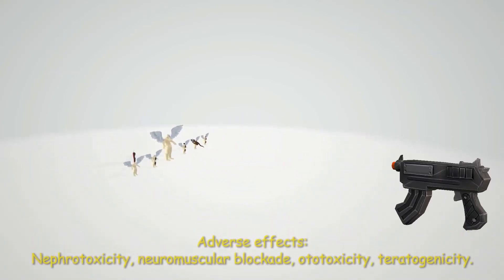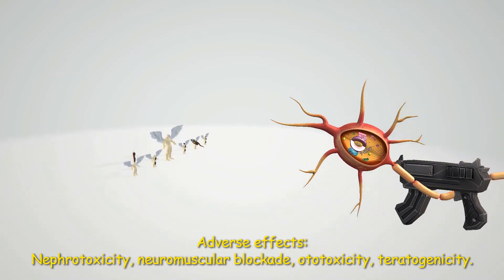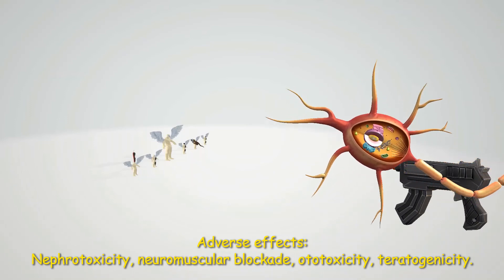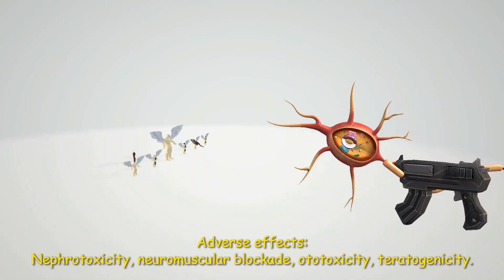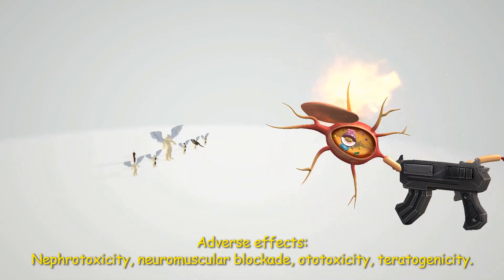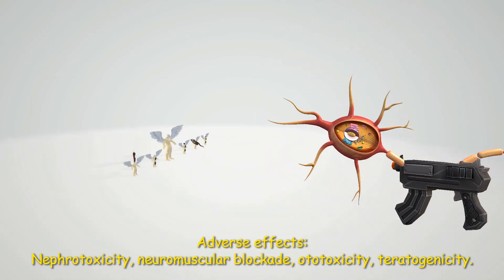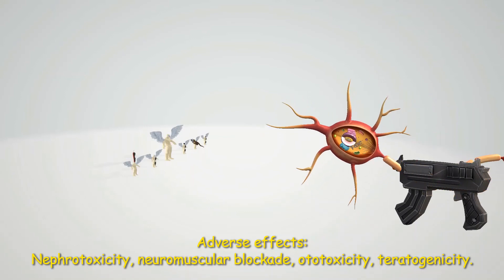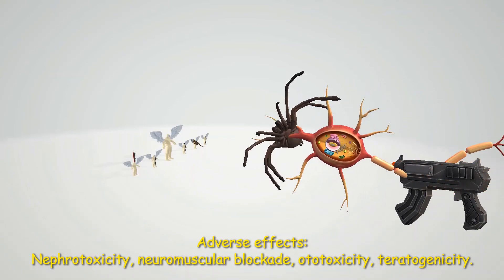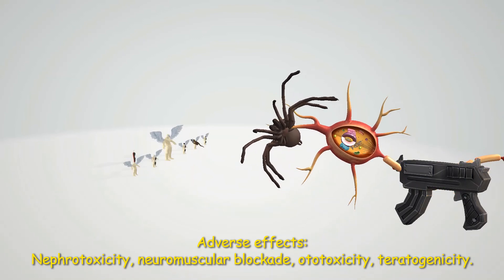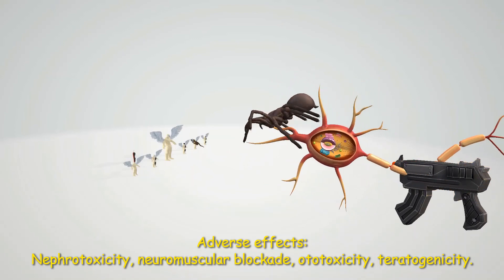The nerf gun reminds us of the nephrotoxicity, and it's shooting out a nerve that's being blocked, which reminds us of neuromuscular blockade. There's also this ear that's exploding, which reminds us of ototoxicity, especially with loop diuretics. The tarantula is there to remind us that aminoglycosides are teratogenic and therefore contraindicated in pregnancy, due to damage to cranial nerve 8.